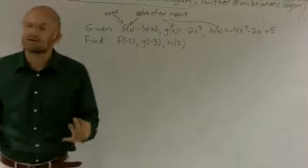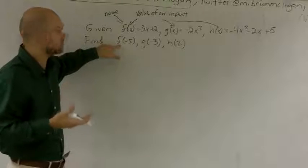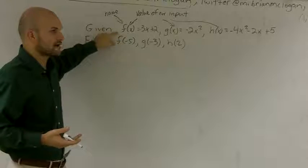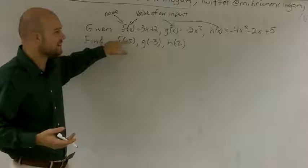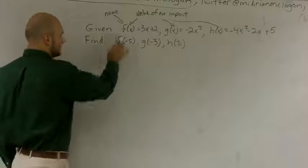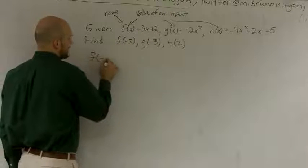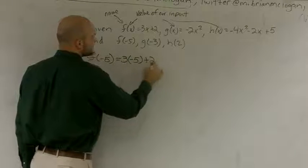So how do I know which value to plug it in for? Well, it's kind of simple. Here, this one is f of negative 5. That's how we say f of negative 5. So I'm going to use Frank. I'm going to have to evaluate Frank for the value of negative 5 of Frank, for Frank's function, right? So to do this one, I do f of negative 5 equals 3 times negative 5 plus 2.